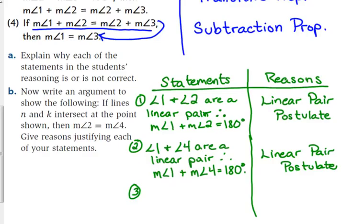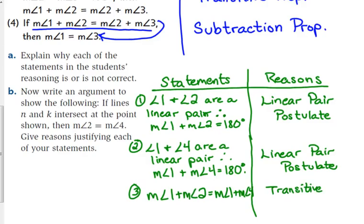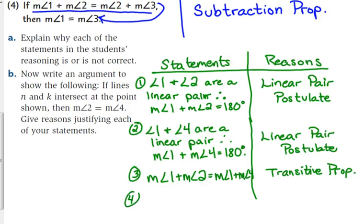Statement 3 is the same as before but with different numbers. Since the measure of angle 1 plus the measure of angle 2 is 180, and the measure of angle 1 plus the measure of angle 4 is 180, I can set those equal to each other — that is the transitive property. Then, subtracting angle 1 from both sides, we are left with the measure of angle 2 equals the measure of angle 4, by the subtraction property.